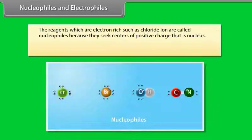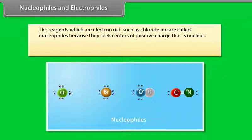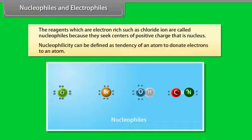Nucleophiles and electrophiles — the reagents which are electron rich, such as chloride ion, are called nucleophiles because they seek centers of positive charge, that is, the nucleus. Nucleophilicity can be defined as the tendency of an atom to donate electrons to an atom.